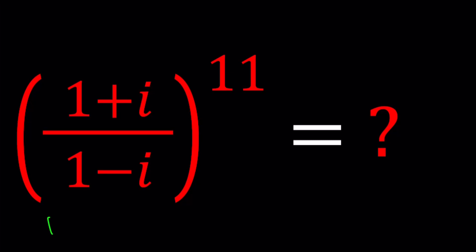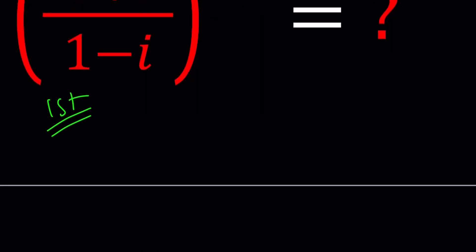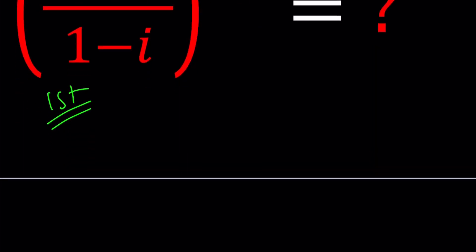So the first method is going to be the following. I'm going to separate these into 1 plus I to the power 11 divided by 1 minus I to the power 11. Don't worry, I'm not going to use the binomial theorem. I'm going to use an identity we just recently talked about. 1 plus I and 1 minus I are special complex numbers. Because when you raise them to the second power, you get an imaginary number.